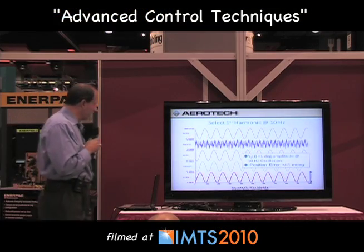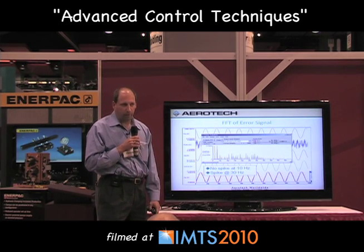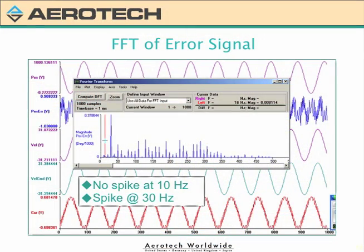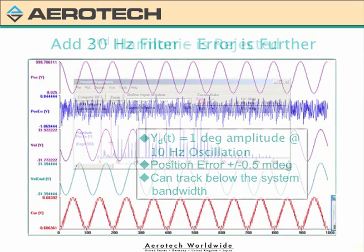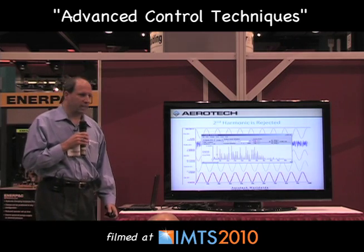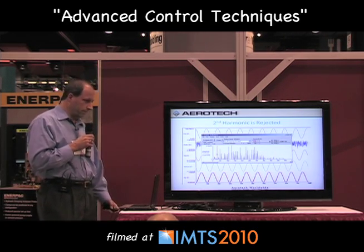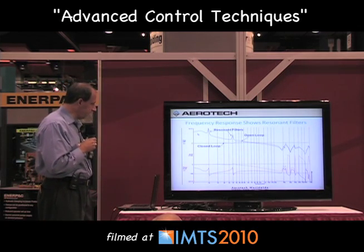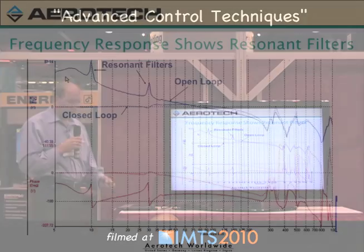That's 21 times less error just by applying this filter. Now there are harmonics you can see in this signal — probably a third harmonic left over. Doing an FFT, you can see there's no spike at 10 Hz, which was the first harmonic removed, but there is a third harmonic at 30 Hz. I then apply a 30 Hz filter and the result is now down to about half a milli-degree. The FFT confirms the 30 Hz harmonic is gone and the 10 Hz is still gone. Everything else is pretty much in the noise — about a 40 times reduction in error due to this oscillatory motion.